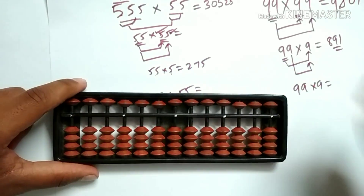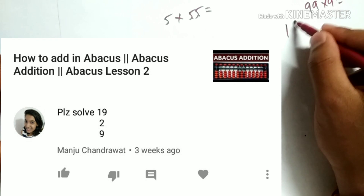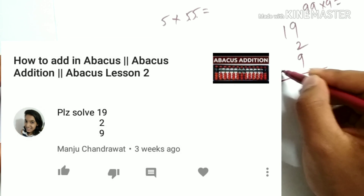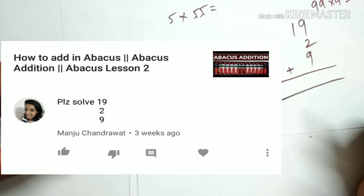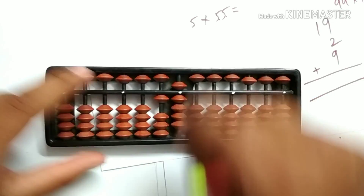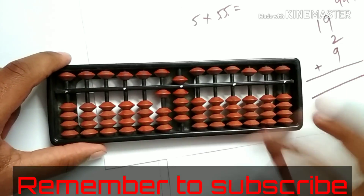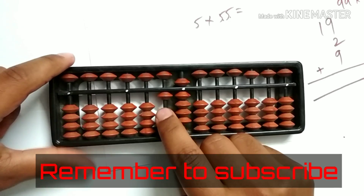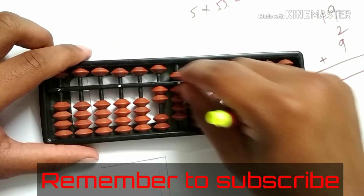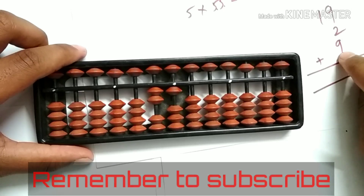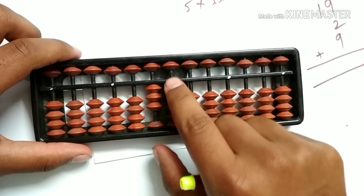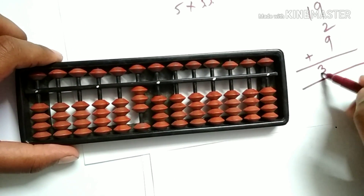The other doubt was adding 19, 2 and 9. Let's do this. Let's place 19 on the abacus. Now we have to add 2. To add 2, let's use big friend's addition — add the friend 10, less the friend 8. And to add 9 — add the friend 10, less the friend 1. Answer is 30.